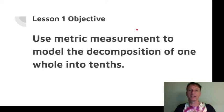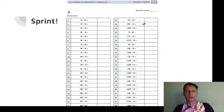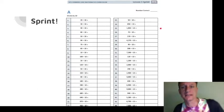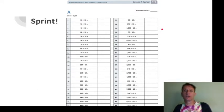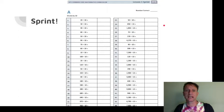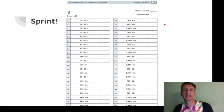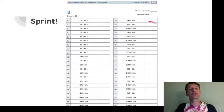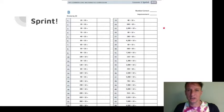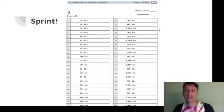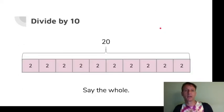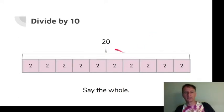There is a sprint, so if you're going to do it, pause and do it now. There's a Side A and a Side B. Mark your number correct and how much you improved when you get to Side B. As for us, we're going to plunge ahead.